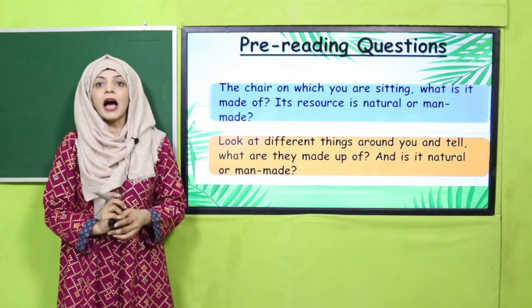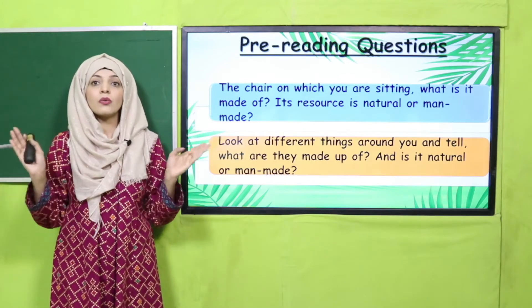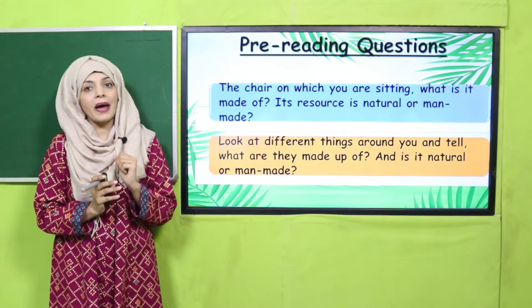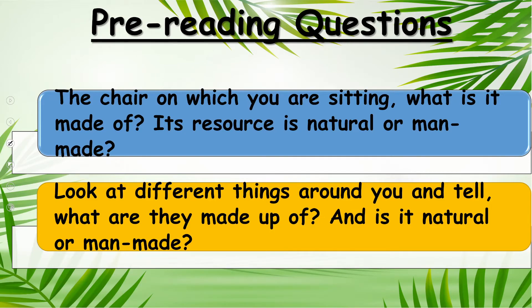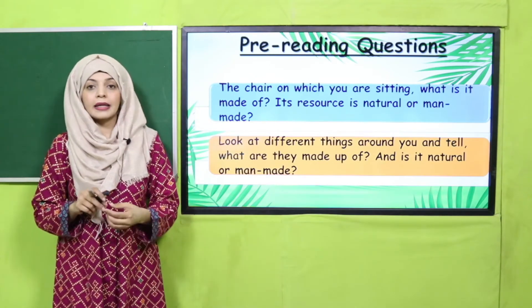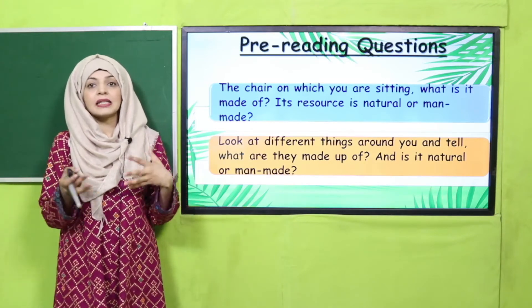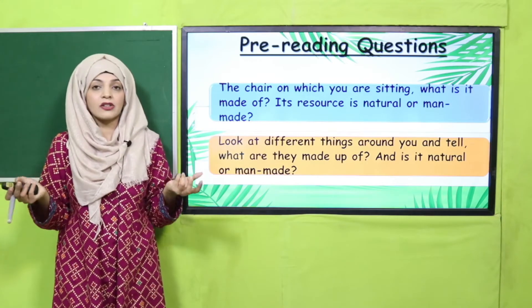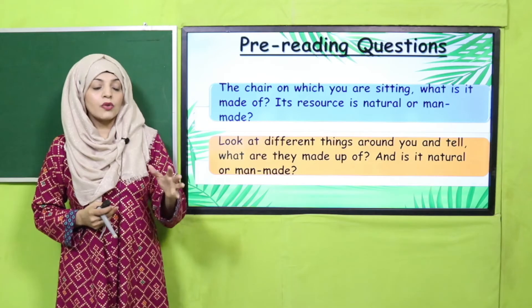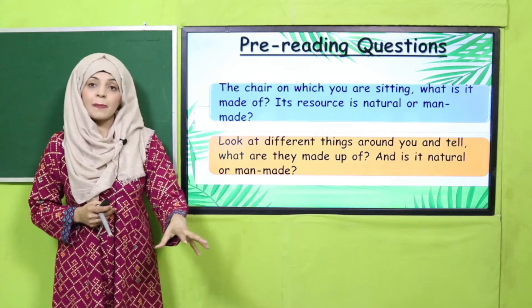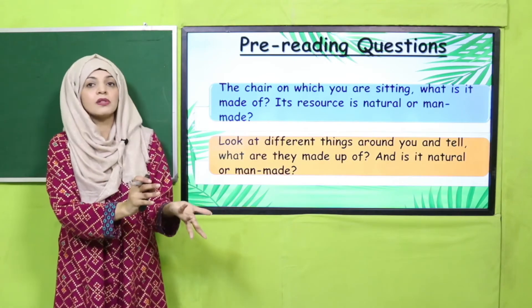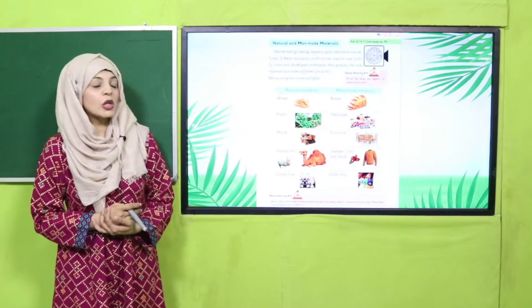Next question: look at the different things around you and tell what they are made of, and whether they are natural or man-made. Pause the video, look around at different things, and then tell what they are made of and whether they are natural or man-made. Around me I can see an LCD, a wooden table, and the clothes I am wearing. All these things are somehow made from natural things. The clothes I am wearing are made from cotton, and cotton is a natural product. The wooden table is made from wood — the table is man-made, but the material it is made from is natural.